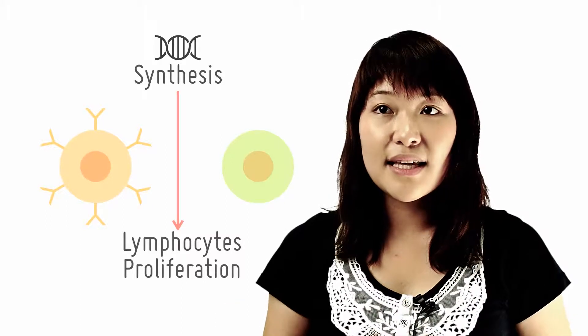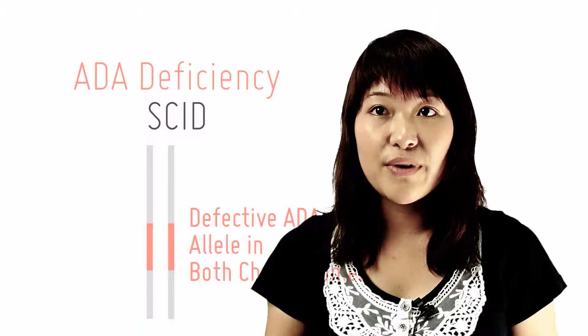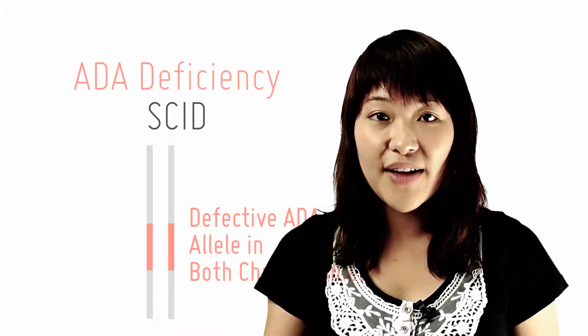This type of SCID is an autosomal recessive disorder, which means that this disease is only expressed when both copies of the ADA alleles are defective.